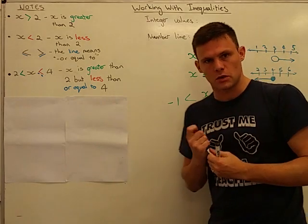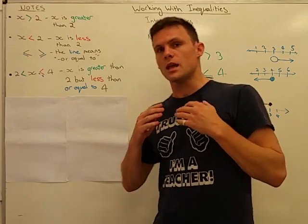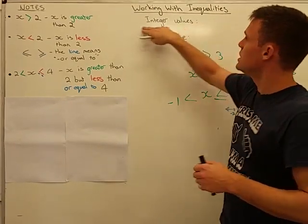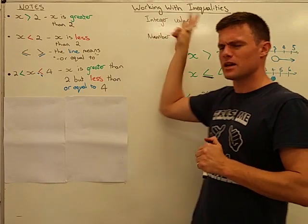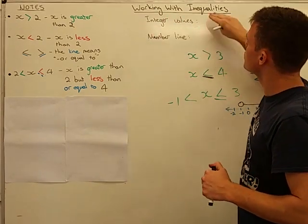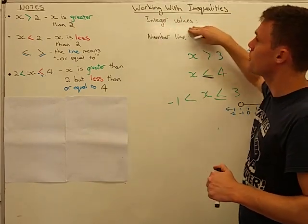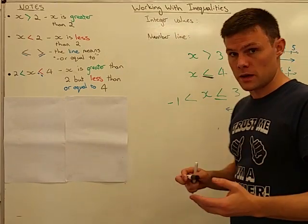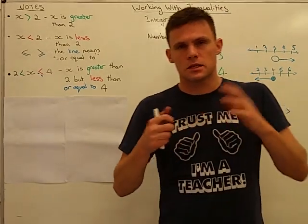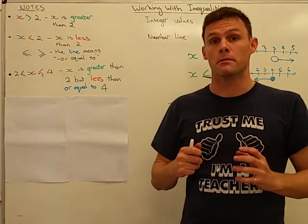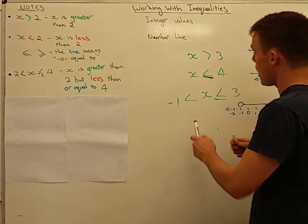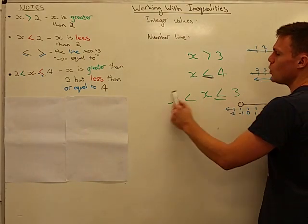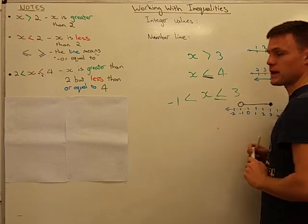Now the second way they can ask you to represent inequalities is by asking you to represent them as integer values. The way they can ask you to represent inequalities is through integer values. So they can ask you what are the integer values of this inequality. All that means is, integer is kind of a maths word for whole numbers. So if we look at this example here, I want to represent all the whole numbers that could be x.